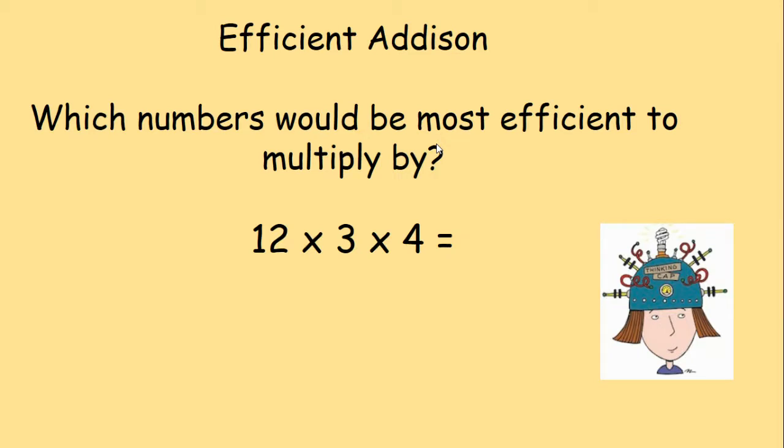Let's take a look at efficient Addison. Which numbers would be most efficient to multiply by? Your question is 12 times 3 times 4. Press pause now to work out the answer using the most efficient method and then press play once you are ready to continue.